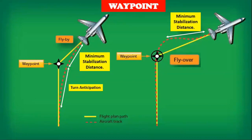A waypoint is a predetermined geographical position defined in terms of latitude and longitude coordinates. There are two types of waypoints. For a fly-by waypoint, the aircraft commences a turn before reaching the waypoint. The distance from the start of the turn up to abeam the waypoint is the distance of turn anticipation, and the distance from abeam the waypoint to the track interception is known as the minimum stabilization distance. For a fly-over waypoint, the aircraft flies over the waypoint and then commences a turn to join the next route segment, with a minimum stabilization distance after the turn to track.